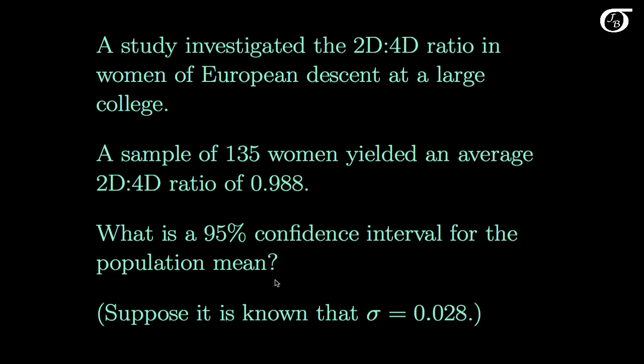A study investigated this ratio in women of European descent at a large college. A sample of 135 women yielded an average ratio of 0.988, so the sample mean is 0.988. Suppose we want a 95% confidence interval for the population mean. Suppose it is known that the population standard deviation sigma is 0.028, and let's suppose that this sample that was obtained was indeed a random sample.